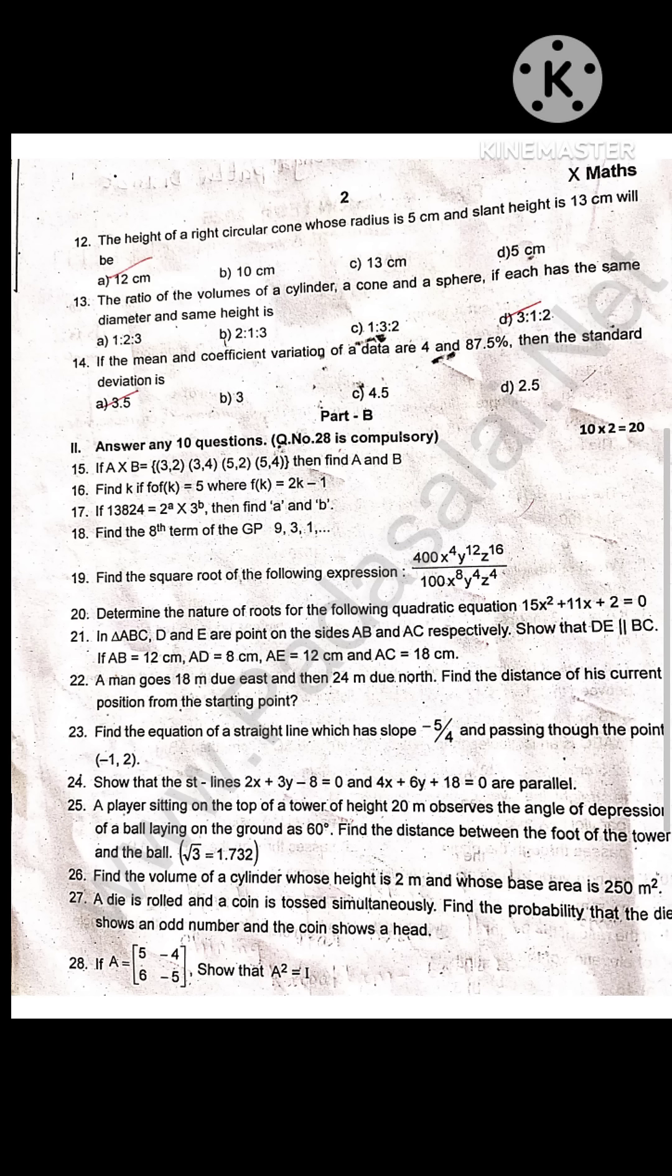If the mean and coefficient of variation of a data are 4 and 87.5 percentage, then the standard deviation is 3.5.